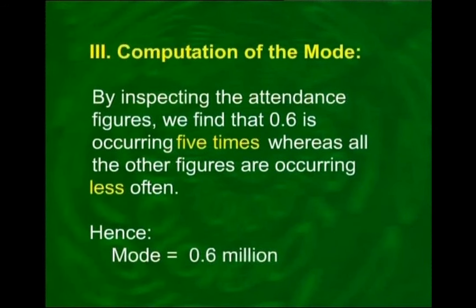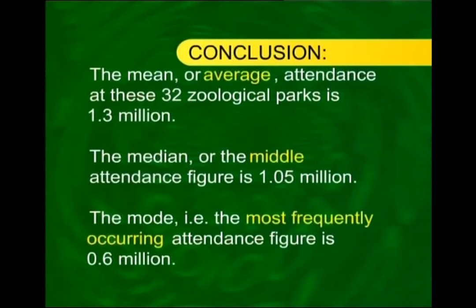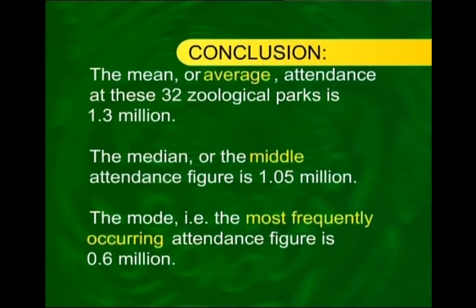For the computation of the mode, by inspecting the attendance figures, we find that 0.6 occurs 5 times, whereas all other figures occur less often. Hence, the mode is equal to 0.6 million. In conclusion: the mean or average attendance at the zoos is 1.3 million; the median or middle attendance figure for these 32 zoos is 1.05 million; and the mode, the most frequently occurring attendance figure, is 0.6 million.